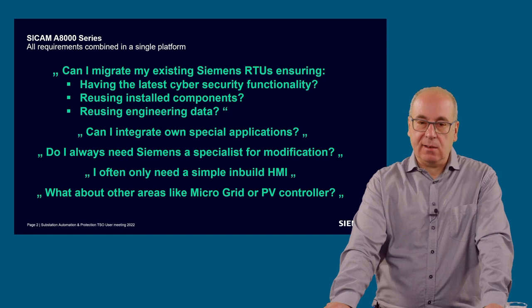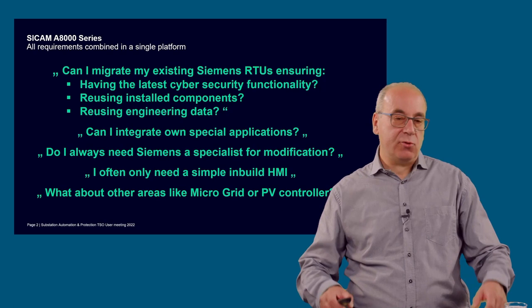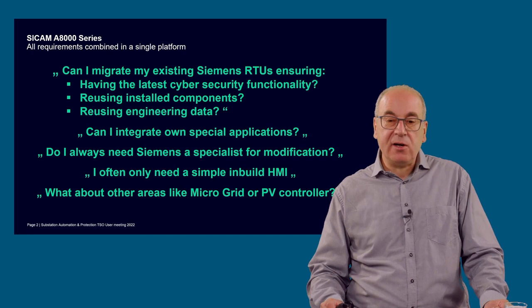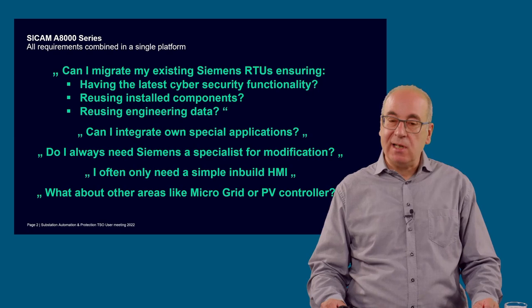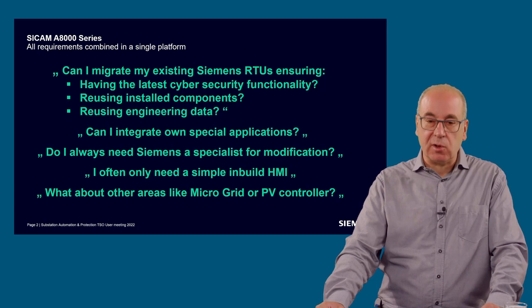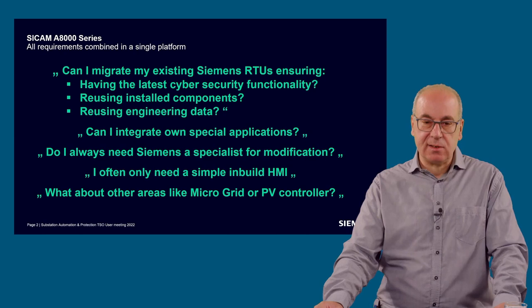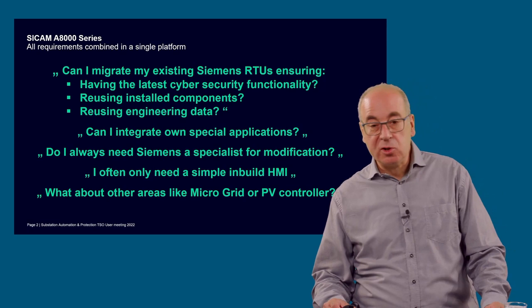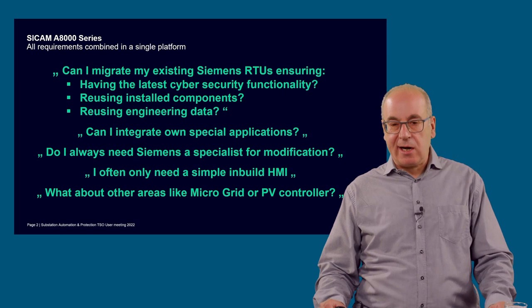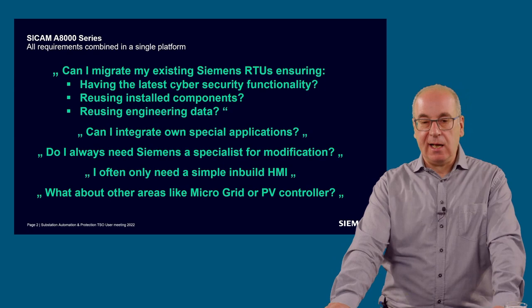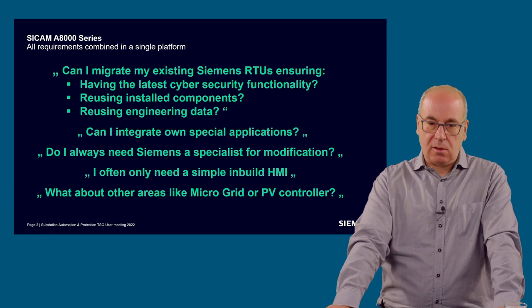In transmission substations very often there is a full-built substation automation system, redundant with client-server architecture for the HMI. But very often that is not necessary because the stations are unmanned, or personnel is not allowed to do local control — coordination is always with the control center. So very often a simple built-in HMI is sufficient. Is that possible with our A8000 system? And what about microgrid or photovoltaic controllers — is that also possible using our A8000 RTUs?